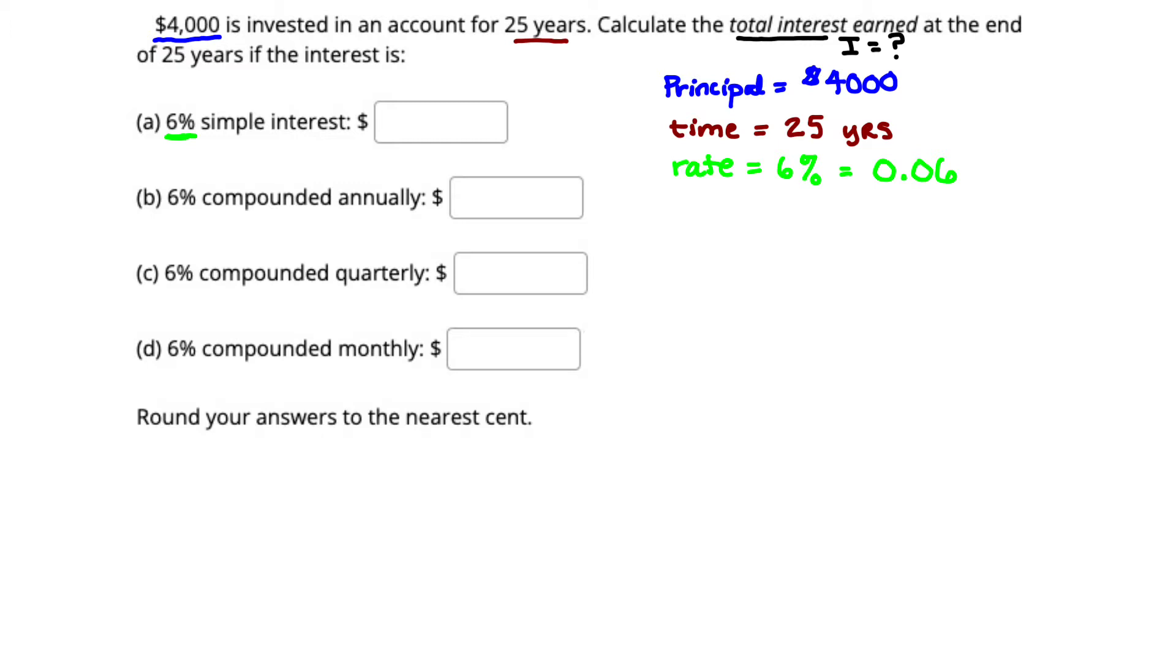Those are key pieces of information. And now we can go about finding all of the things for A, B, C, and D. So let's start with 6% simple interest. I'm just going to draw a bar here, and we're going to start with simple interest, part A. What do we know about simple interest? Well, in simple interest, there's two formulas that we use. But specifically, because we're looking for our I-value, or our interest value, we want to use the simple interest formula, I equals P times R times T.